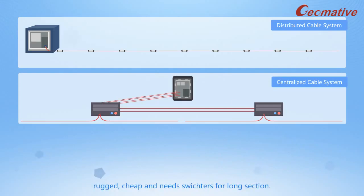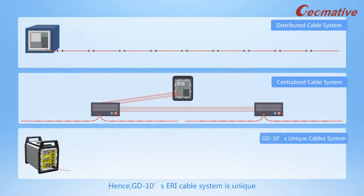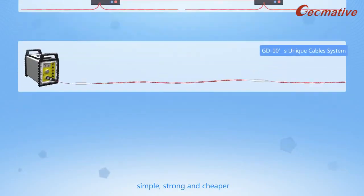Centralized cable system is rugged, cheap, but needs switch turns for long sections. Hence, GD-10's ERI cable system is unique, simple, strong, and cheaper.